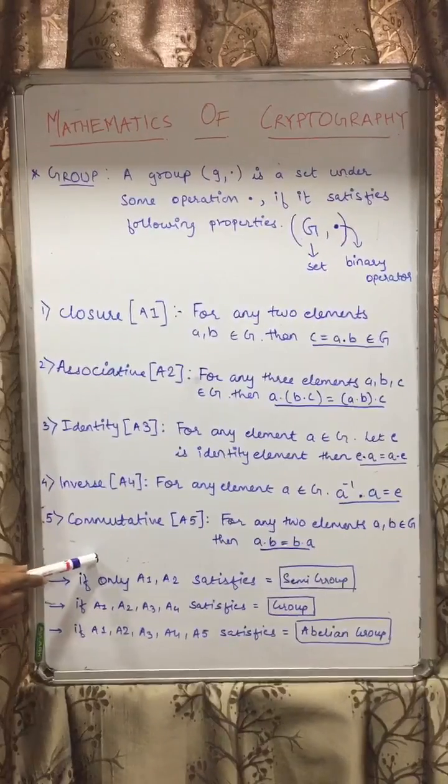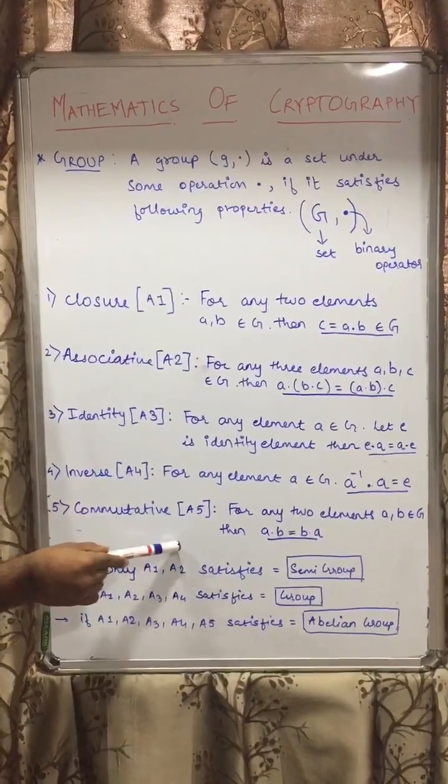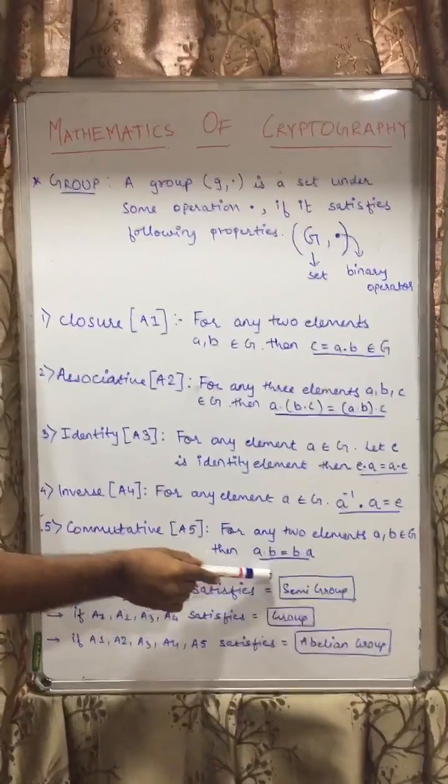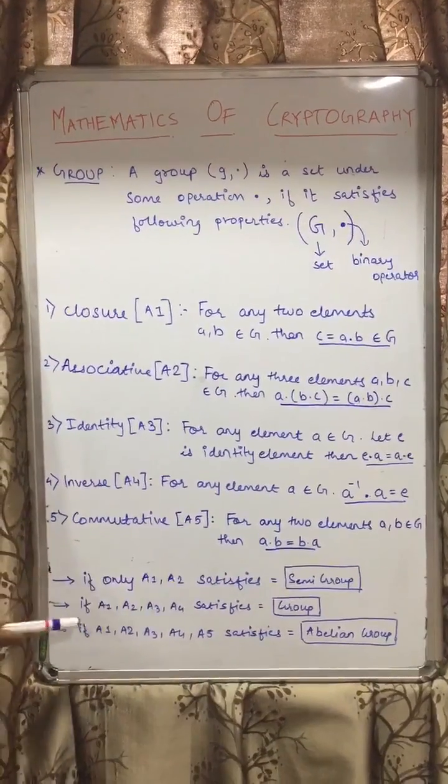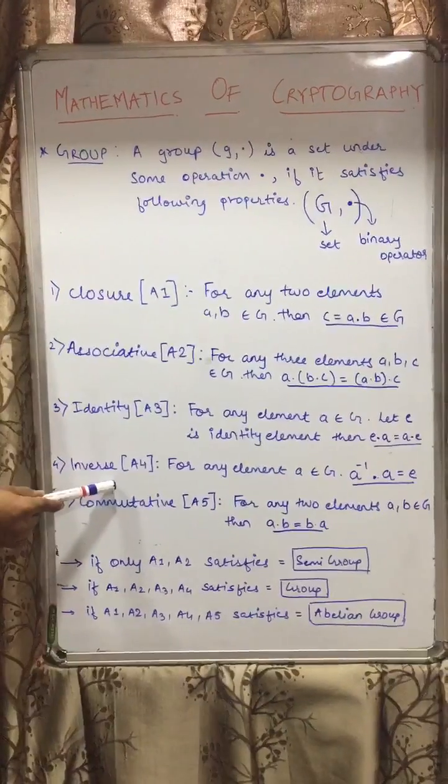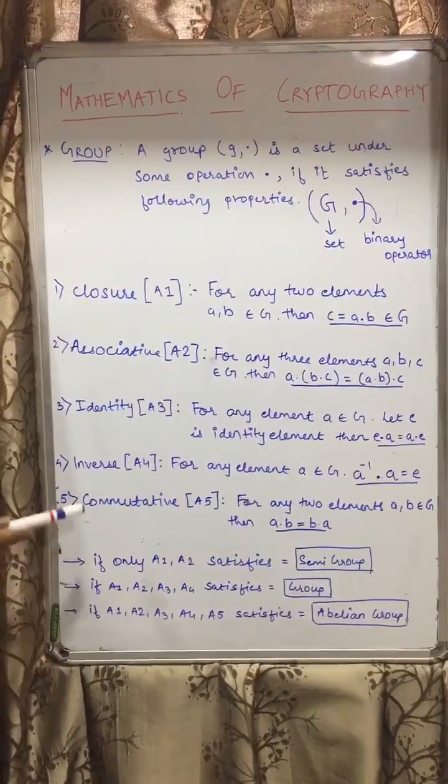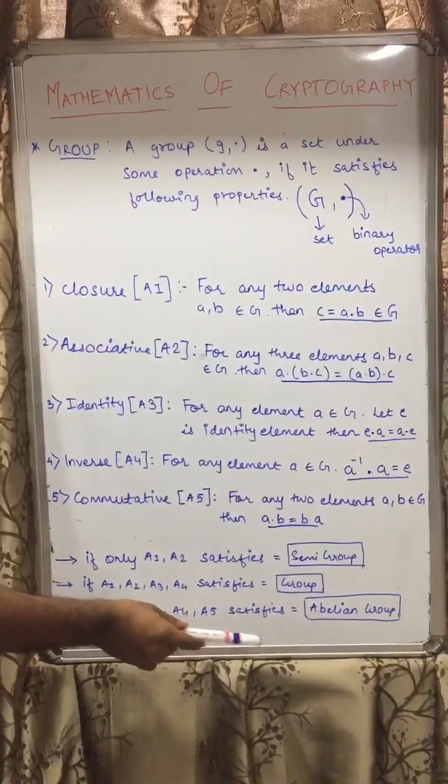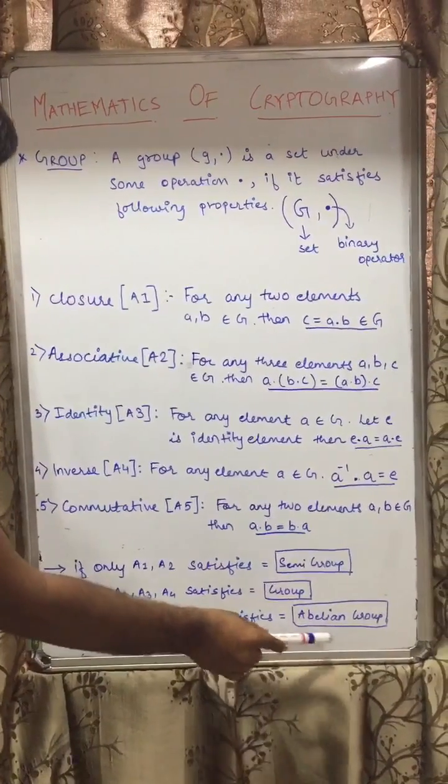Now if in an example only the A1 and A2 properties are satisfied, which are closure and associative, then that group is called a semi-group. If A1, A2, A3, and A4 all these properties are satisfied, then it is known as a group. And if A5 also gets added, so A1, A2, A3, A4, and A5, then that group is known as an abelian group.